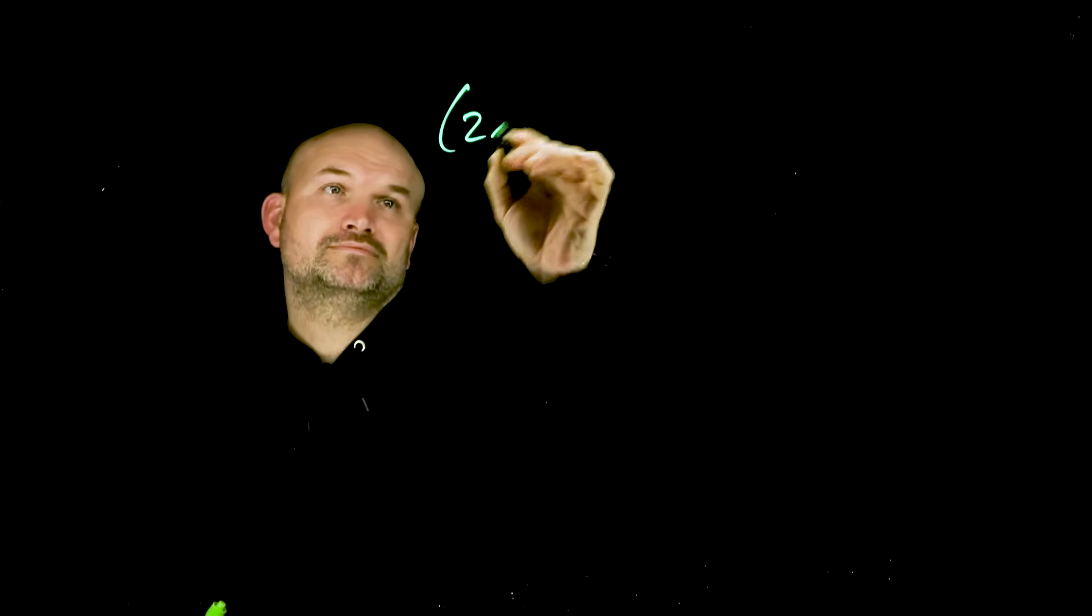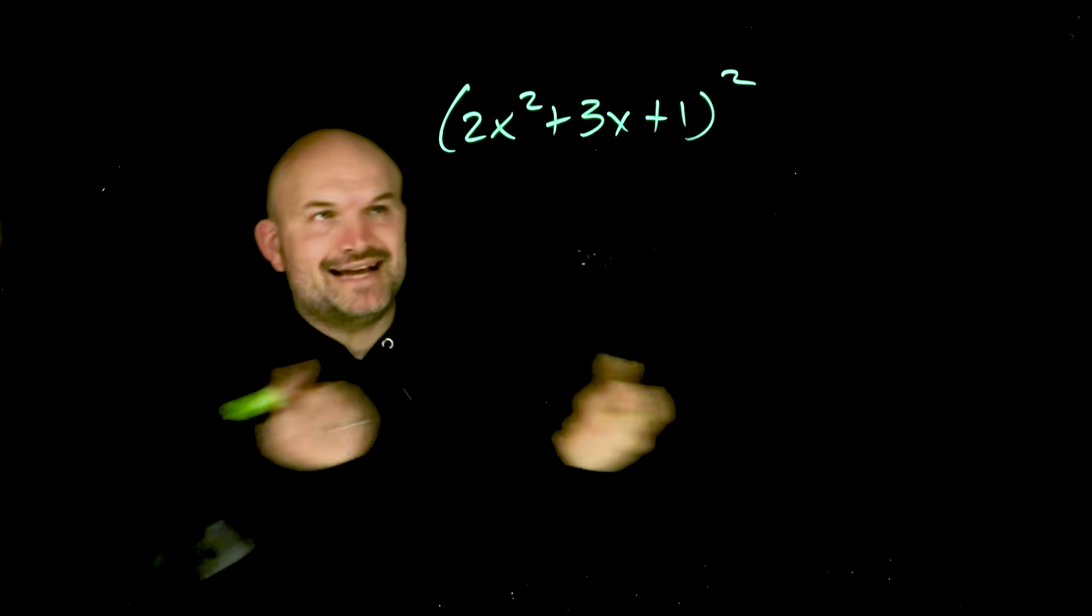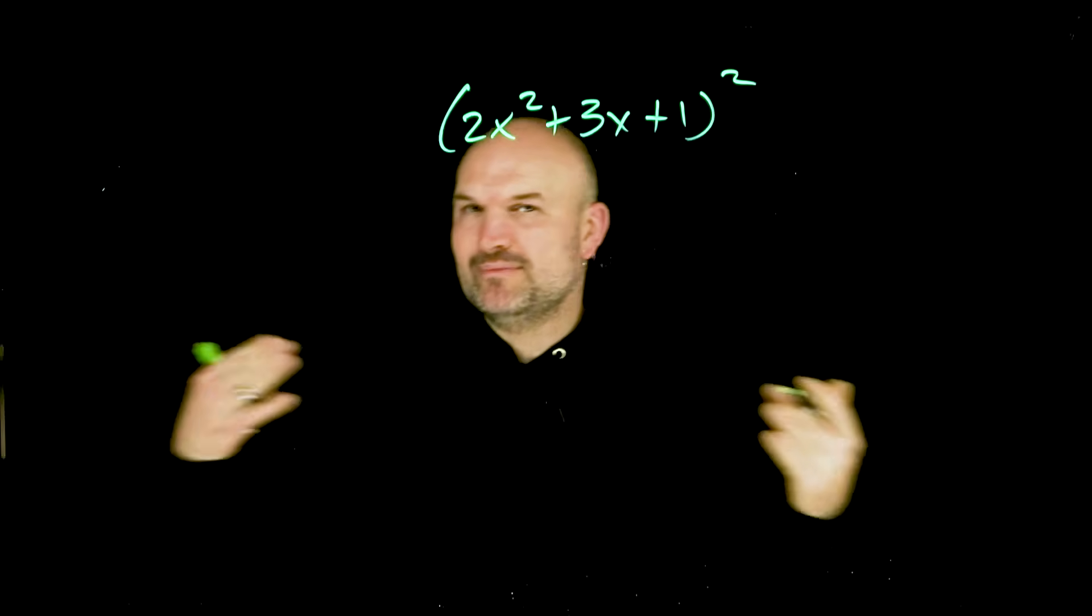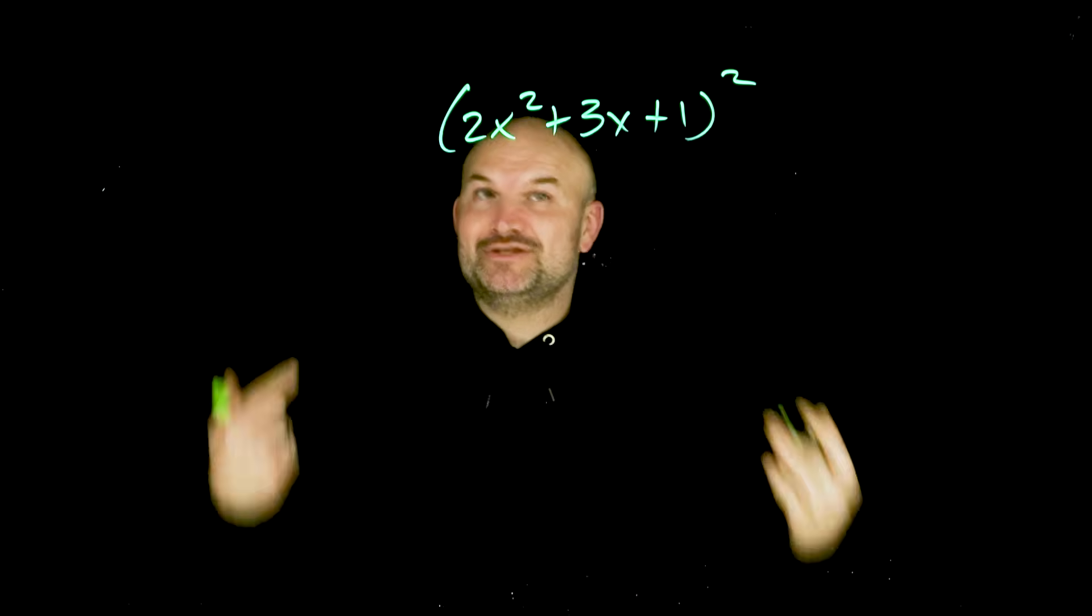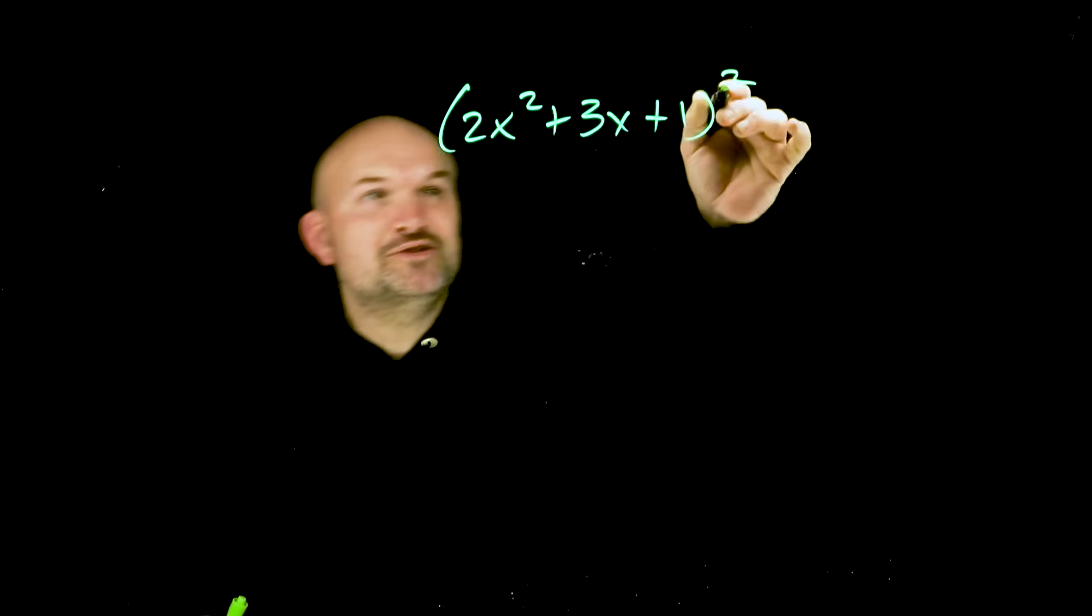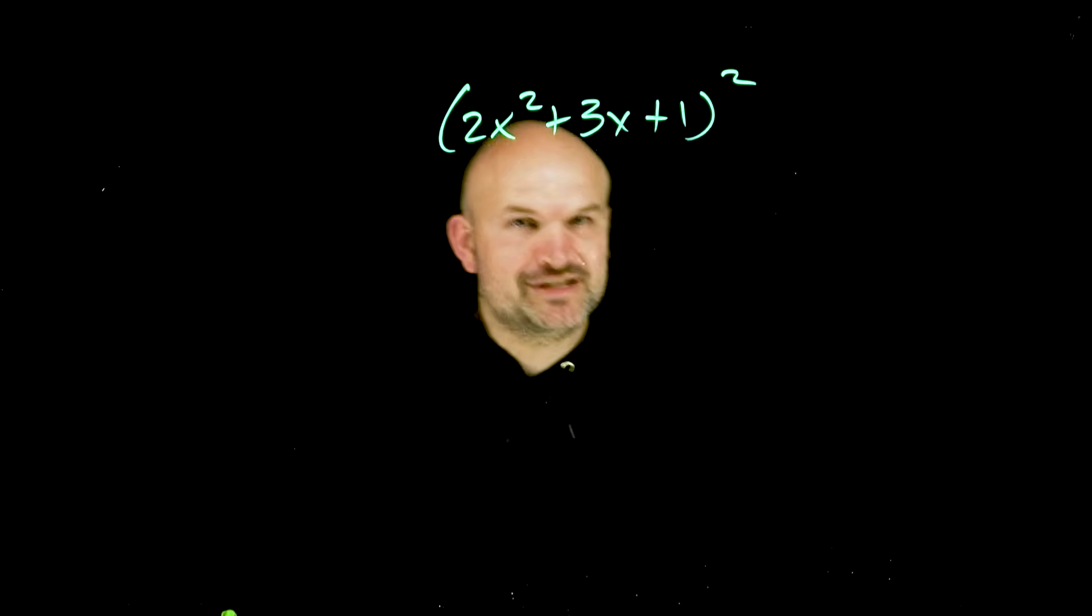Here's a helpful tip when you need to multiply a trinomial by another trinomial. In this case, I have a trinomial squared, but remember that means we're going to multiply 2x² + 3x + 1 times 2x² + 3x + 1. Do not distribute the power across addition and subtraction.